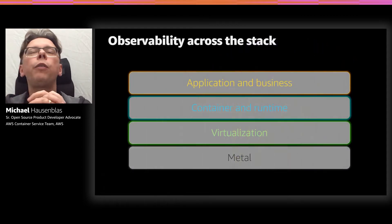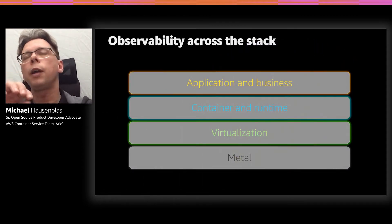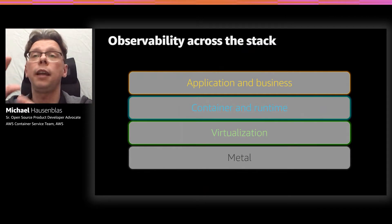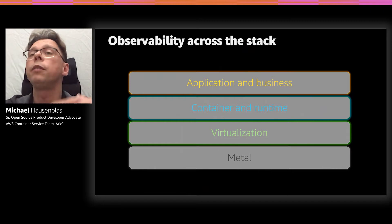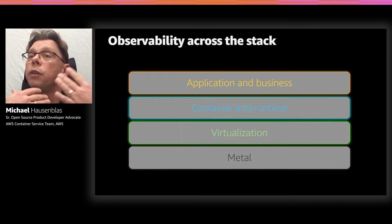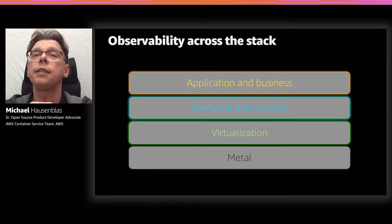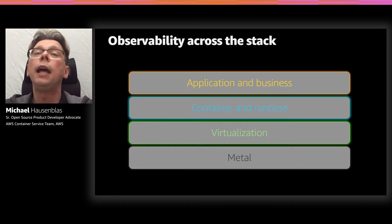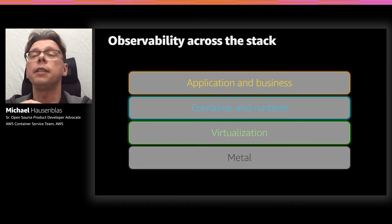A quick reminder: when I talk about observability, I'm really talking about observability across the entire stack — from the infrastructure level, where you could have EC2, a bare metal instance, virtualized environments, container runtimes like Lambda, all the way up to application and business level metrics.